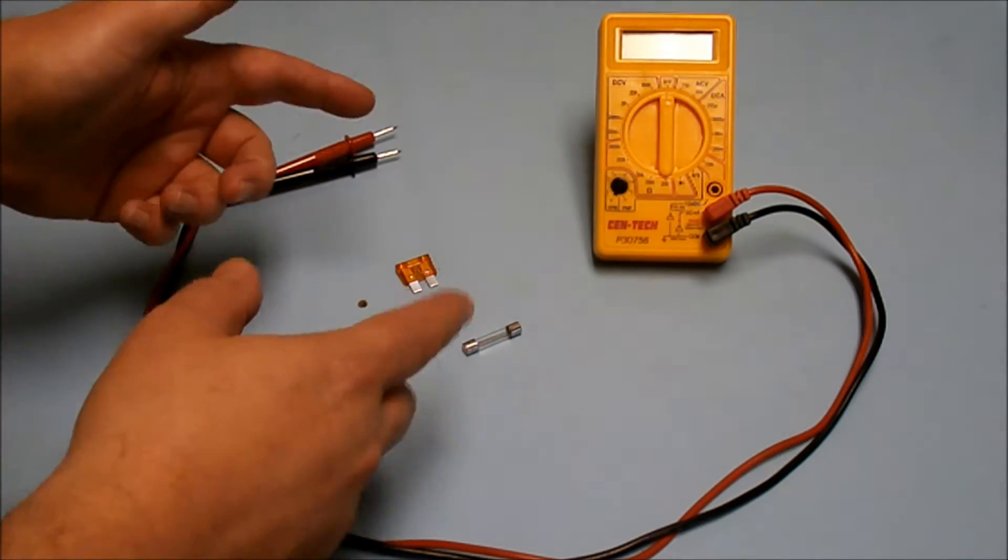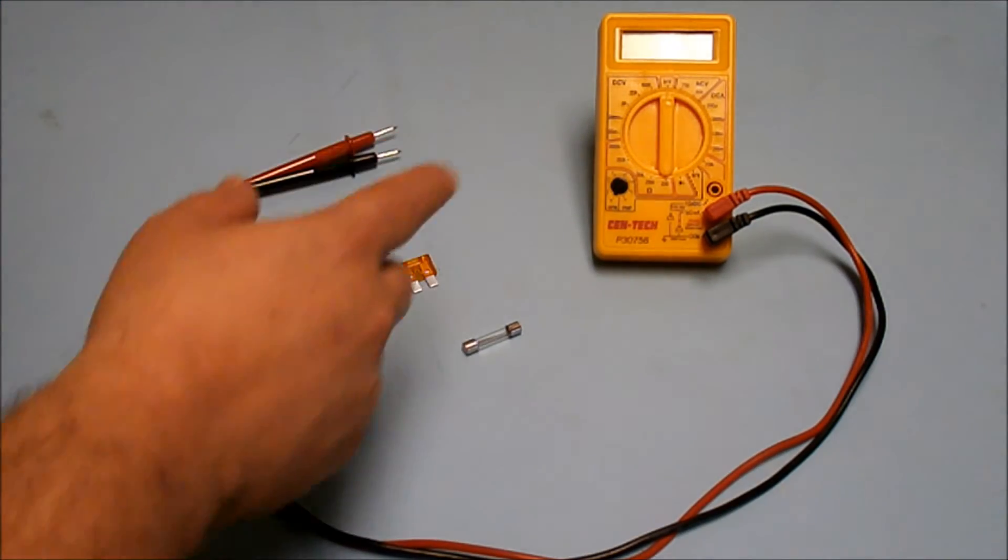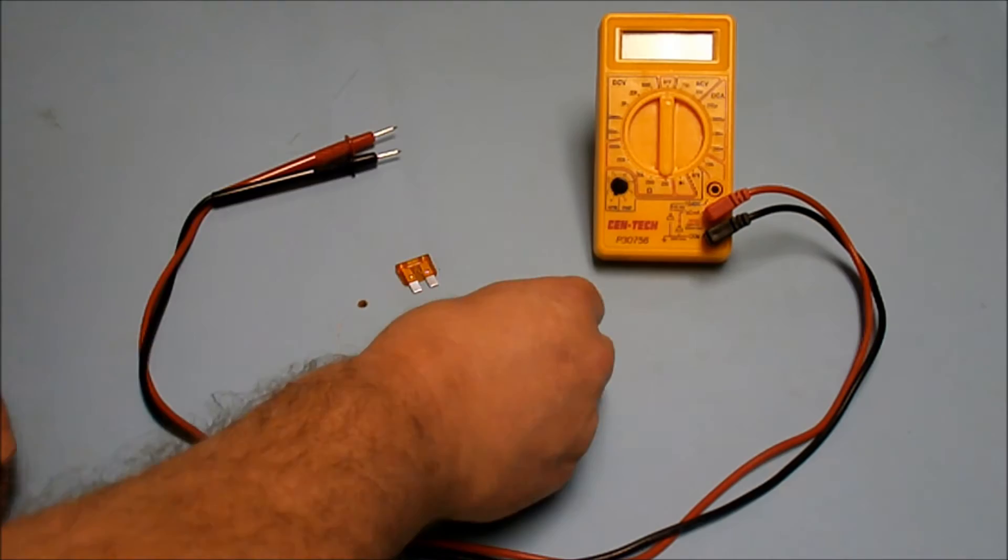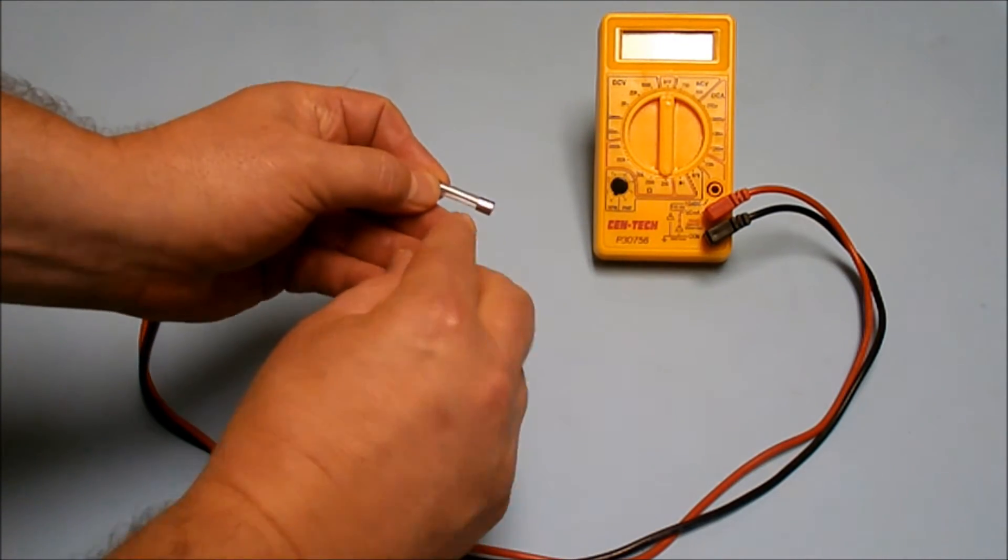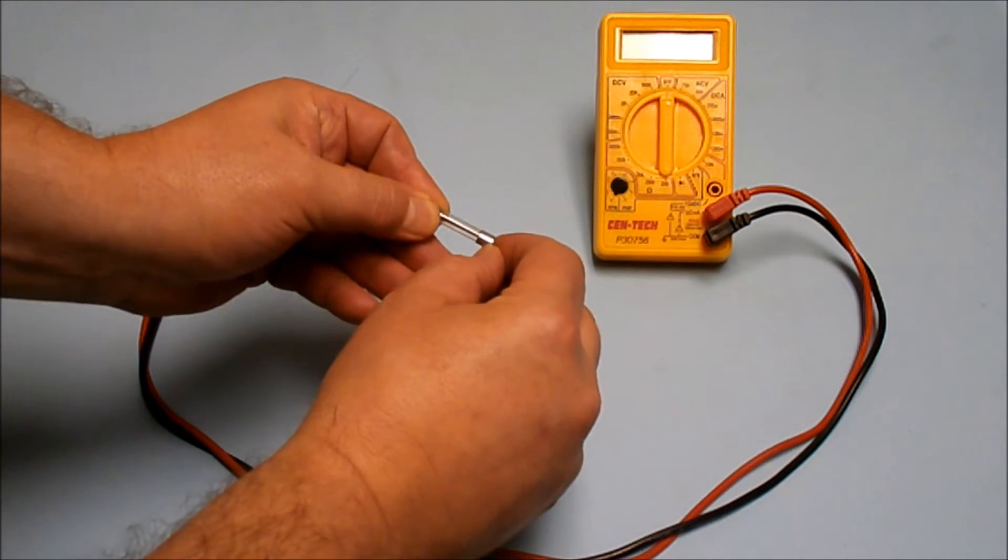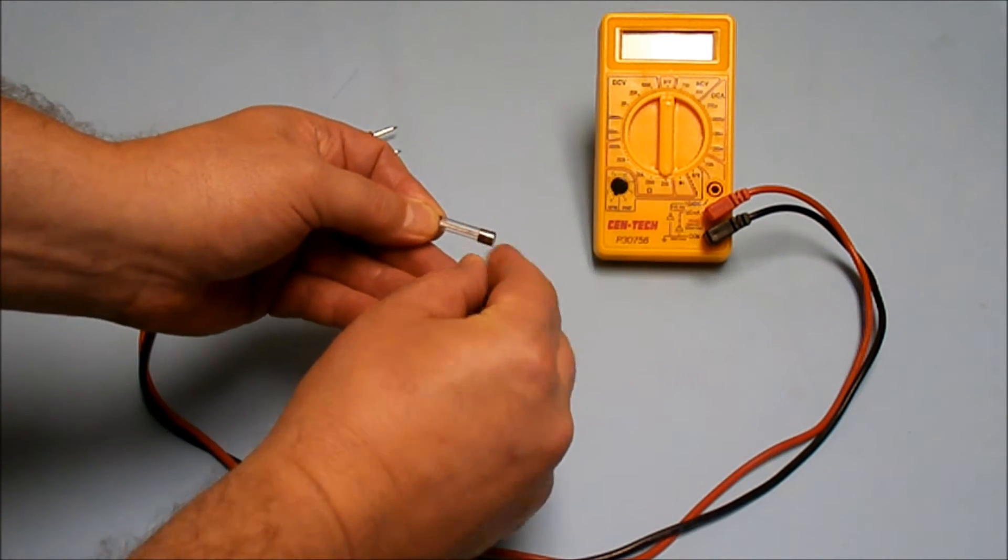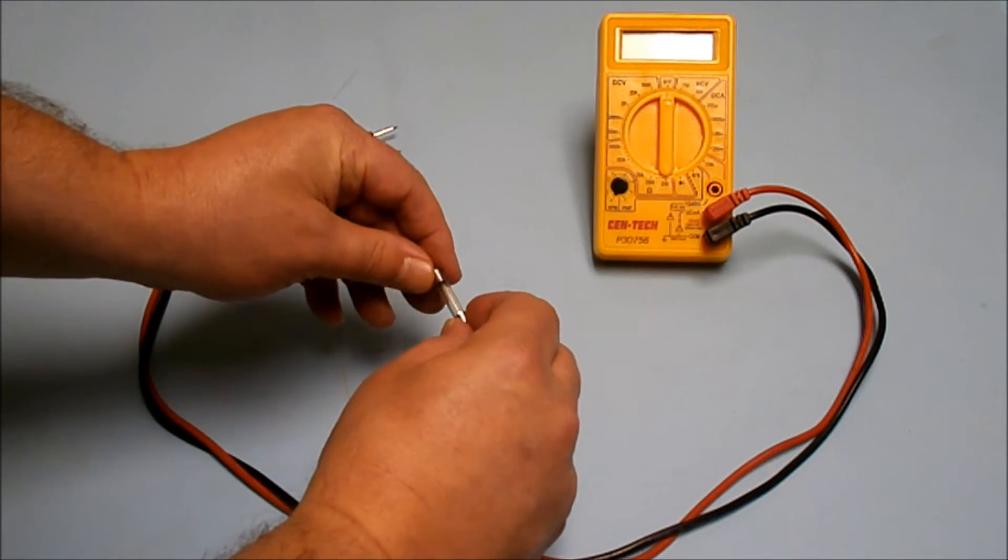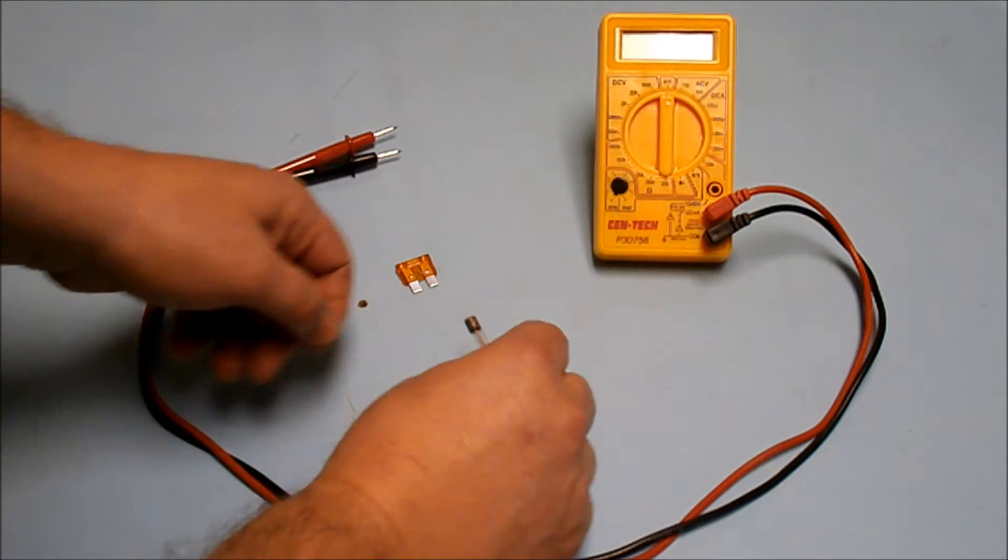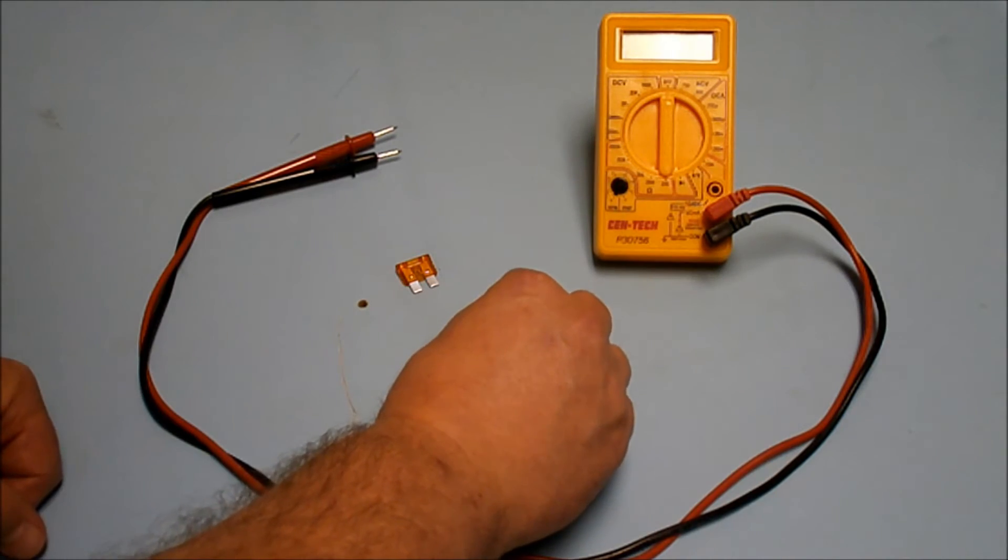It's always a good idea to test your fuses with a multimeter because a lot of times a fuse won't look burned out. It'll look good, but it'll be burned out under the end here, the end cap, where you can't see it. So it might look good, but it might not be good. So if the scooter's not working, you definitely want to test it with a meter.